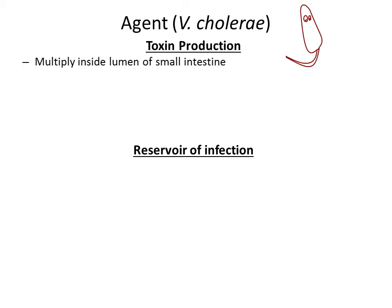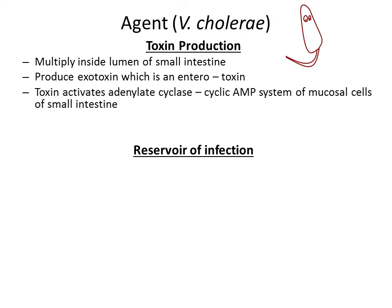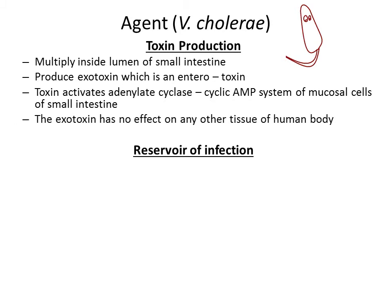Vibrio cholerae multiplies inside the lumen of the small intestine and produces an exotoxin. This exotoxin is an enterotoxin that is toxic to the intestine. The toxin activates adenyl cyclase, which activates the cyclic AMP system of mucosal cells of the small intestine. The exotoxin has no effect on any other tissue apart from the epithelium of the gut.